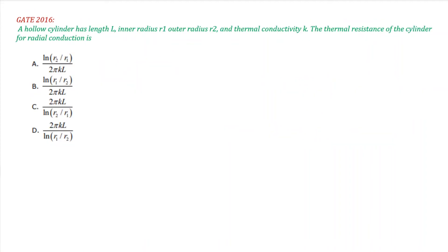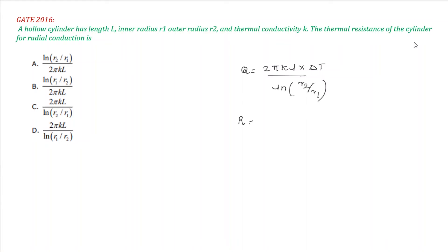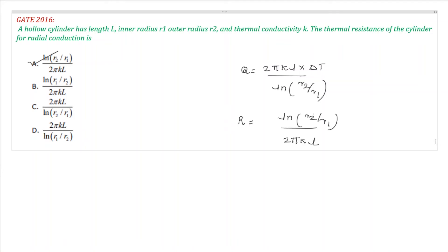The next question is one mark from Gate 2006. A hollow cylinder has length L, inner radius R1, outer radius R2, and thermal conductivity K. We need the thermal resistance formula. The heat transfer is Q = 2πKL × ΔT / ln(R2/R1), so the thermal resistance equals ln(R2/R1) divided by 2πKL. Answer A. This is a direct formula application — very simple.